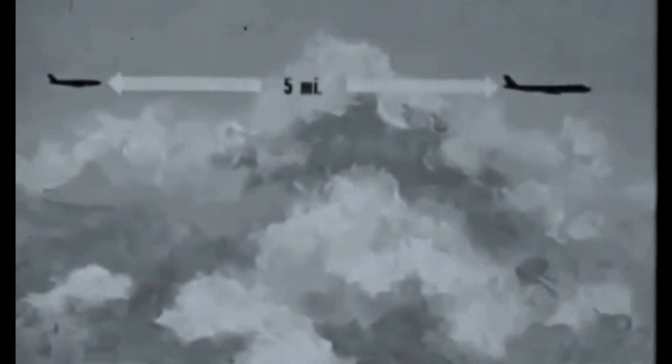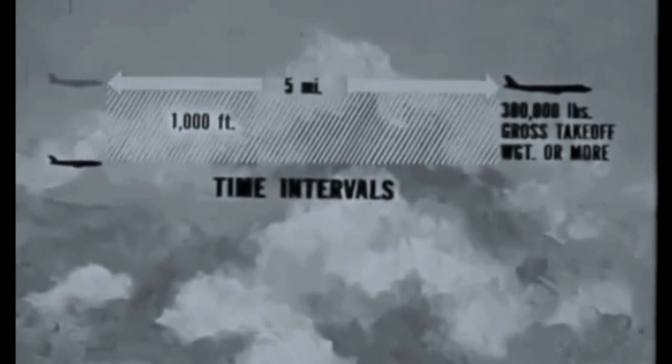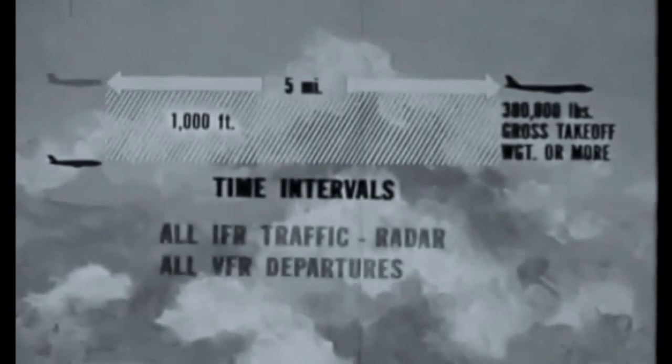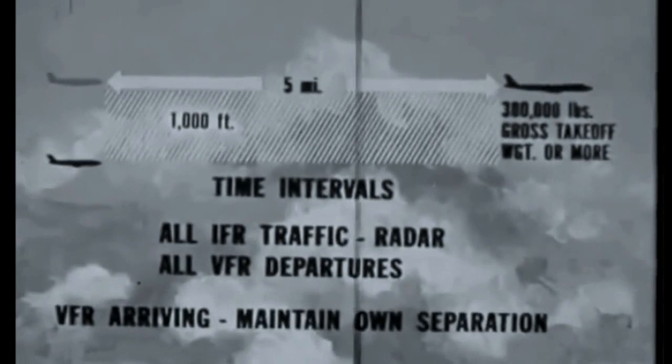Research indicated that a 5-mile minimum separation should be maintained when within 1,000 feet below and behind any aircraft capable of a gross takeoff weight of 300,000 pounds or more. Separation varies depending on the size of the generating aircraft versus the encountering aircraft. This was translated into time intervals for landing and takeoff situations. These separation standards, put into effect in mid-1970, are applicable to all IFR traffic being radar vectored and to VFR departures. Pilots of VFR arriving aircraft are expected to maintain their own separations.